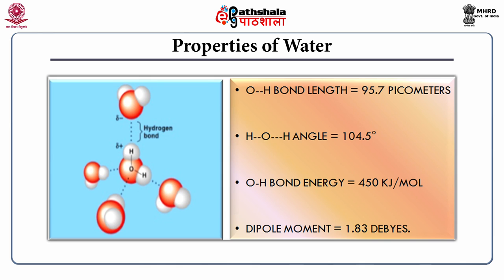However, water is neutral as it has equal number of electrons and protons, giving it a zero net charge. The basic structure of a water molecule is well known: the oxygen-hydrogen bond length is 95.7 picometers, the HOH angle is 104.5 degrees, the energy carried by the oxygen-hydrogen bond is about 450 kilojoules per mole, and the dipole moment of the molecule is 1.83 debyes. Each water molecule can form hydrogen bonds with up to four neighbors. The key properties of water are dipole moment, dielectric constant, heat capacity and its ability to both donate and accept protons.